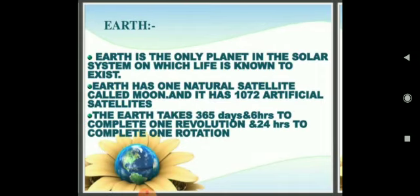The Earth is the planet that we live on. In order of distance, it is the third planet from the sun, and it has one natural satellite called the moon. The Earth's surface is neither too hot nor too cold because the atmosphere contains 78% nitrogen, 21% oxygen, 0.03% carbon dioxide, and the rest other gases. The Earth revolves around the sun in 365 and 1/4 days and rotates about its axis in 24 hours. Seasons change due to two factors: the axis of rotation of the earth is inclined at 23.5 degrees, and the elliptical orbit means the earth is not always at the same distance from the sun.